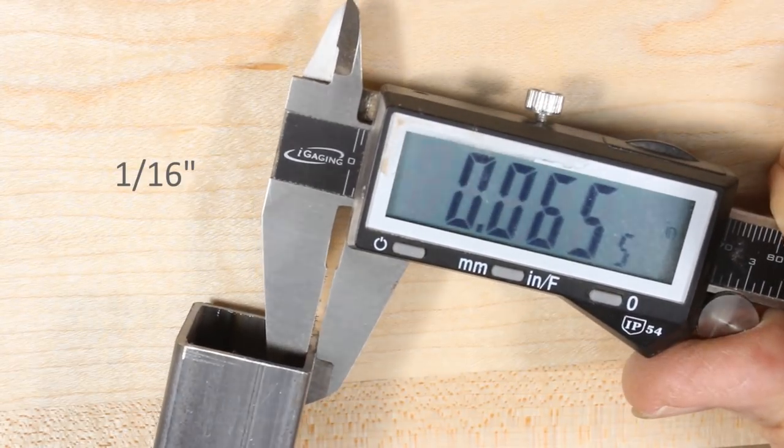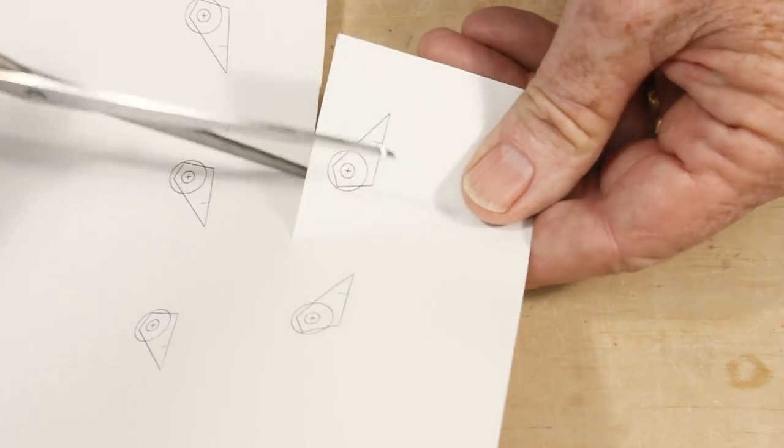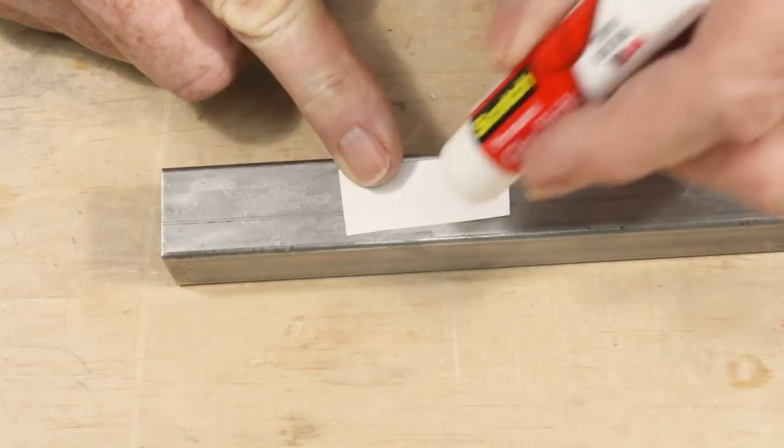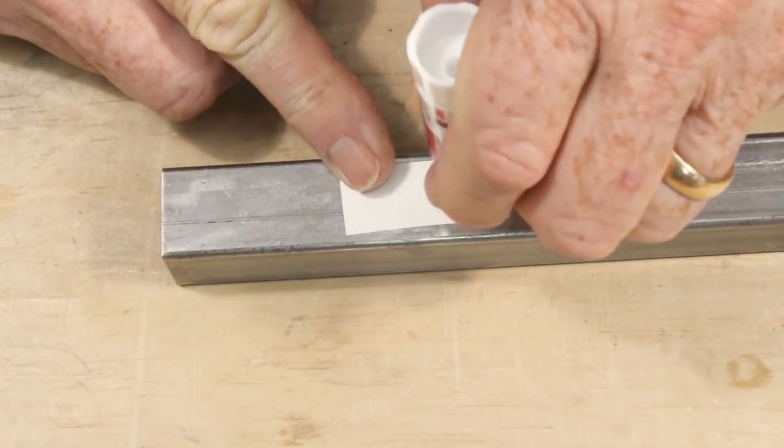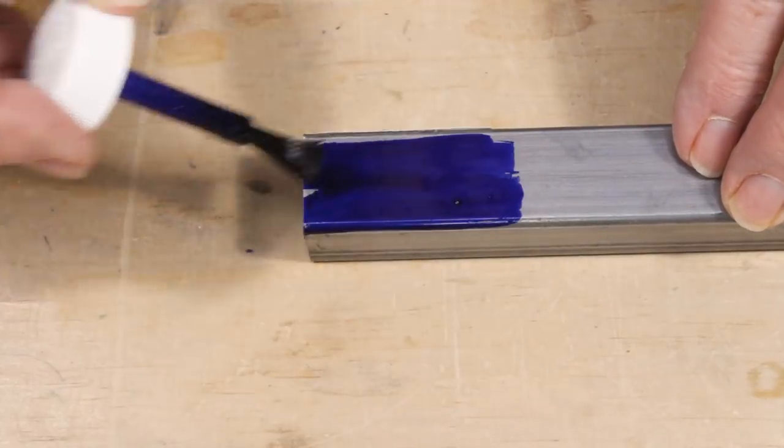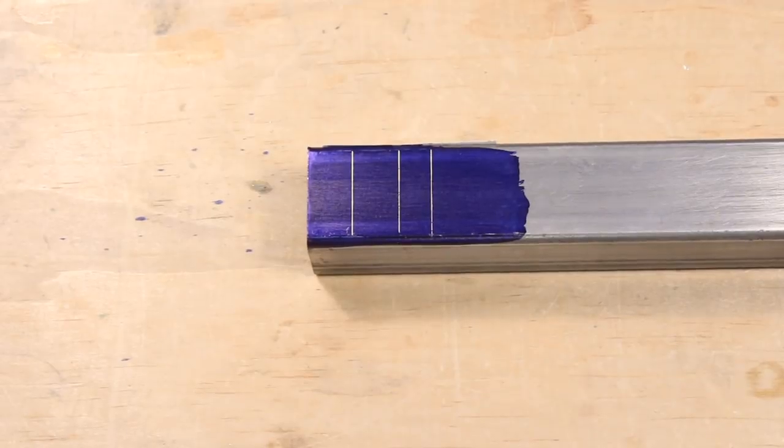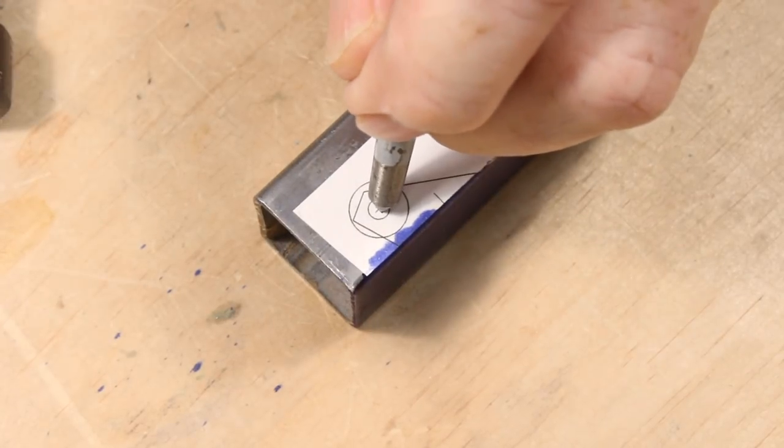I started with 1 inch square steel tubing. You only need a few inches. I made a paper pattern on my computer. I pasted the pattern on one side to guide the cutting. I also carefully marked the centers for the holes I would drill. Here I used blue layout fluid, but you could also use a sharp pencil.